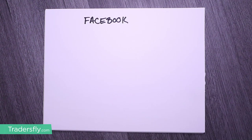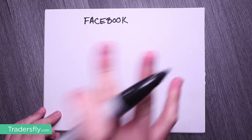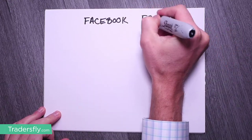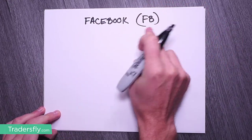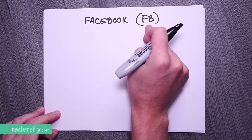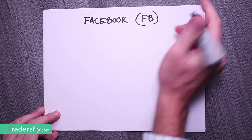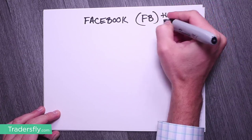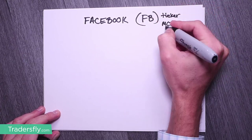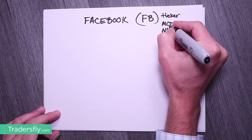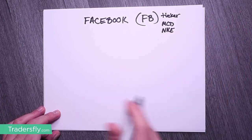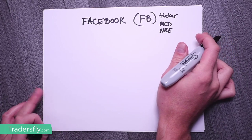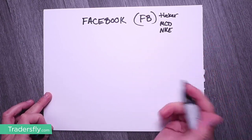So here what we have is a Facebook chart. When you're looking at Facebook, there's going to be a little abbreviation. This is Facebook, because when you type it in and you want to buy shares of Facebook, this is called the ticker — the ticker symbol. There are other tickers like McDonald's, and here is Nike, NKE. They all have abbreviations. You can either look those up, or you could memorize them with time. They're just three to four characters.